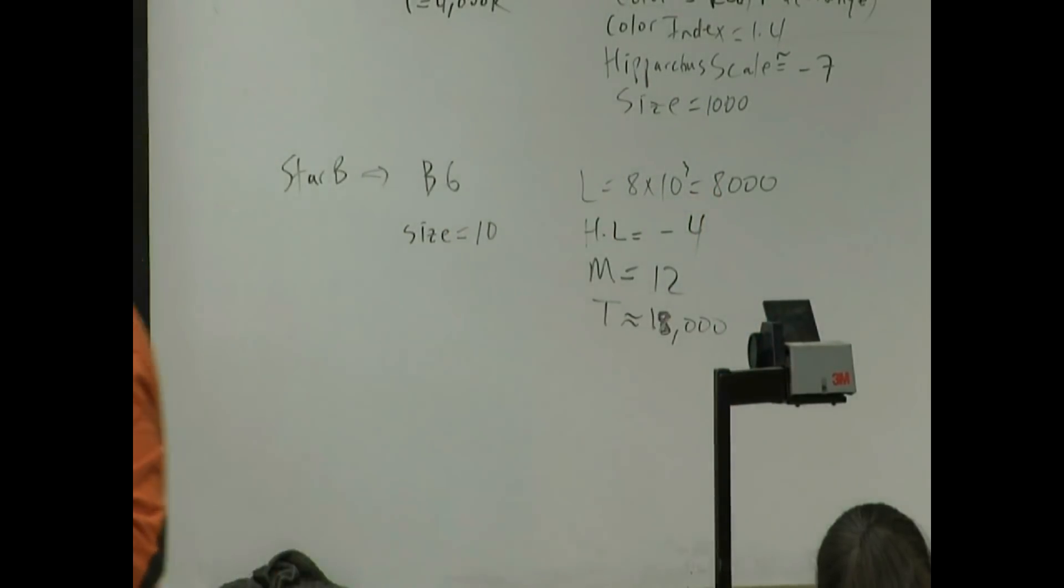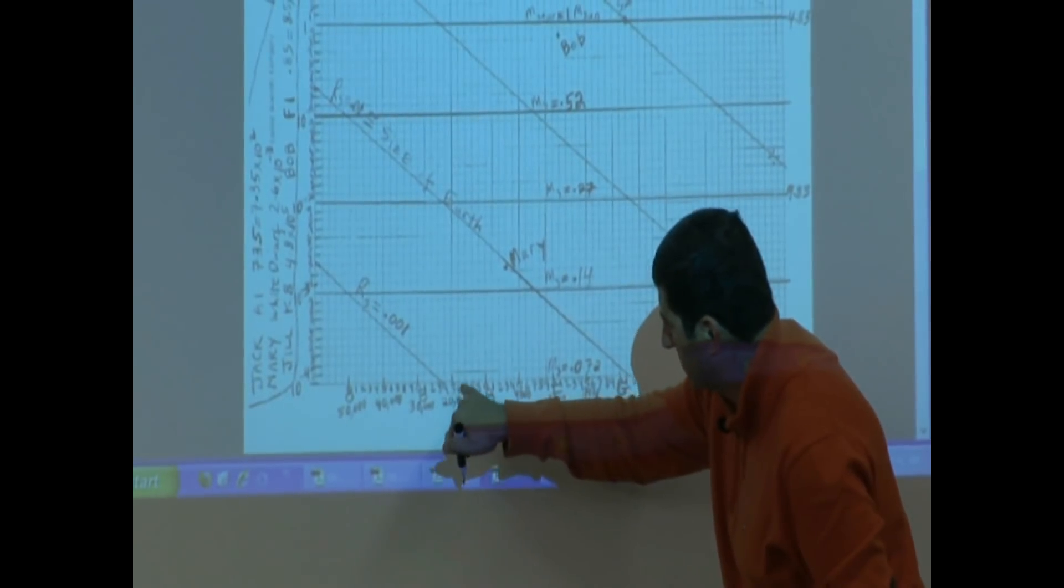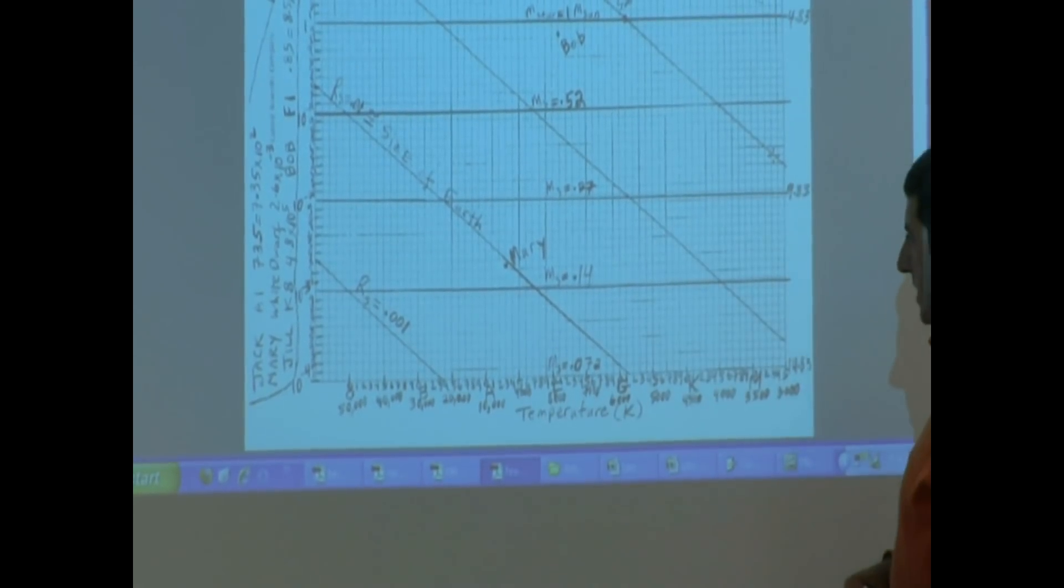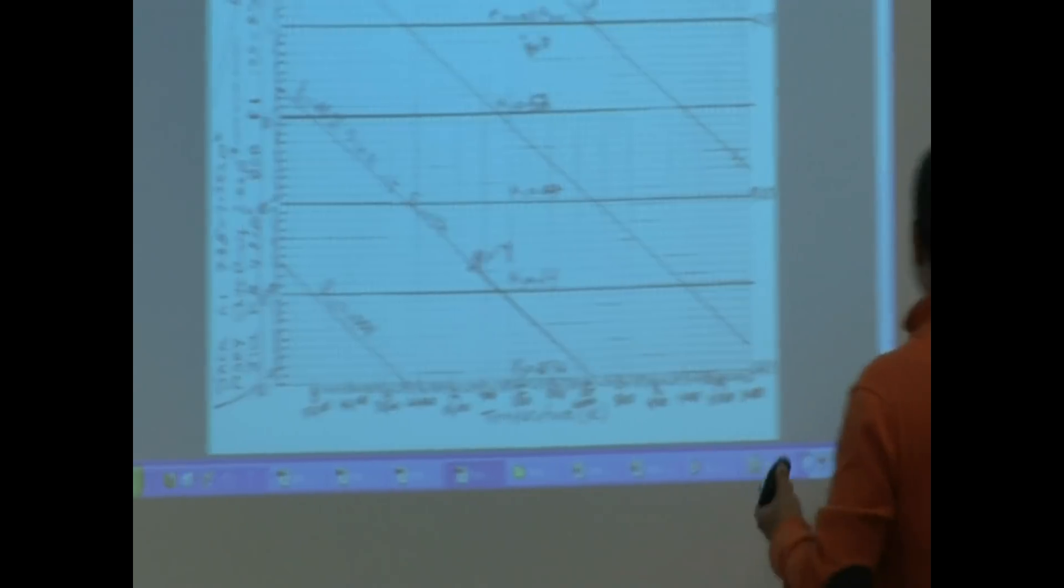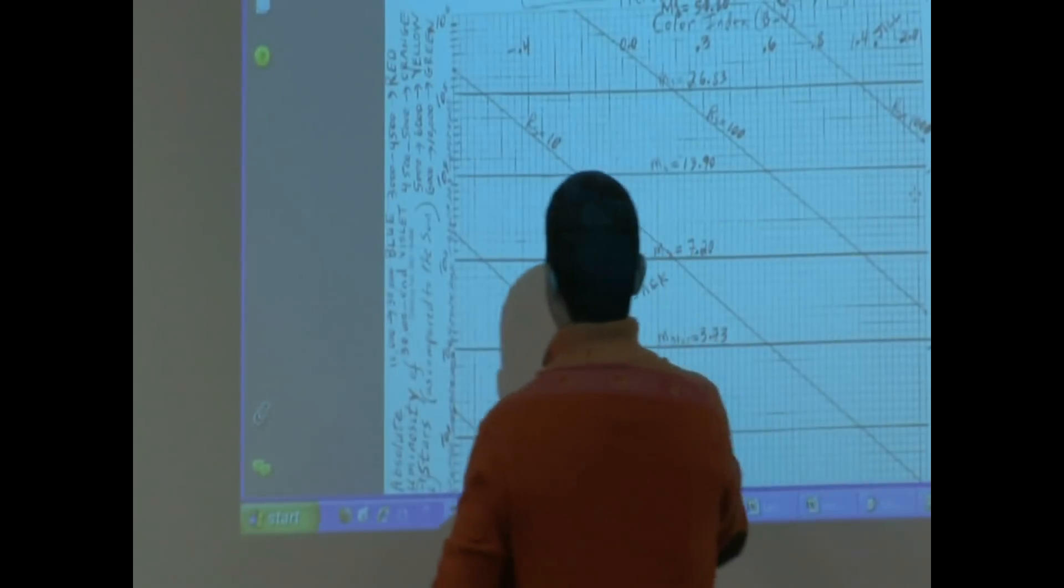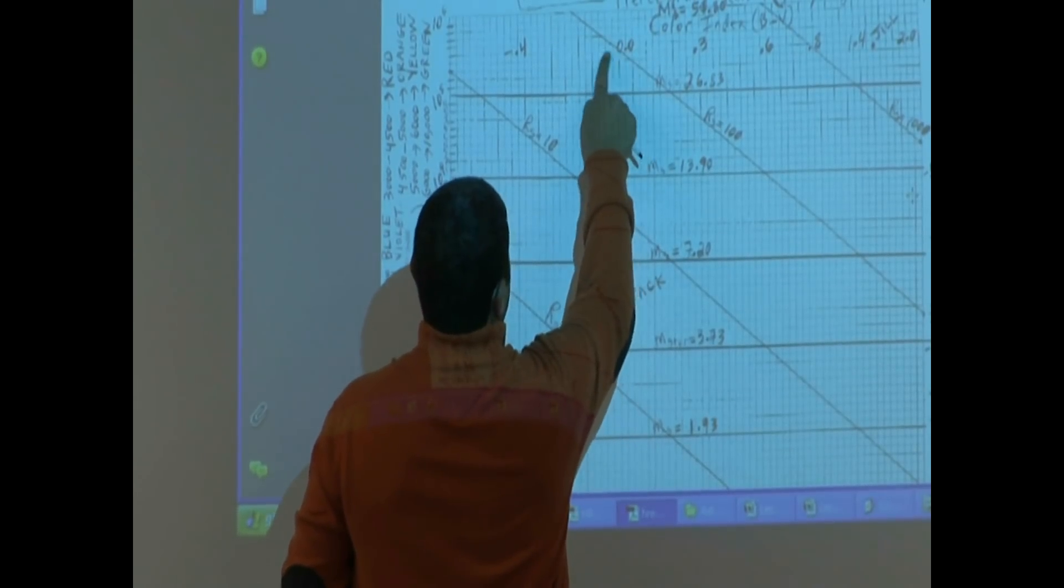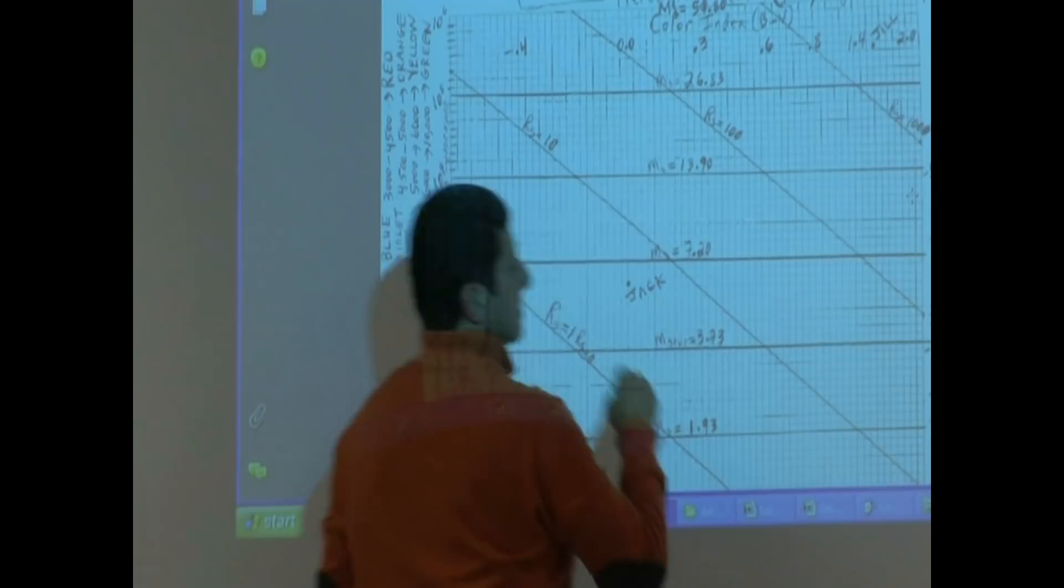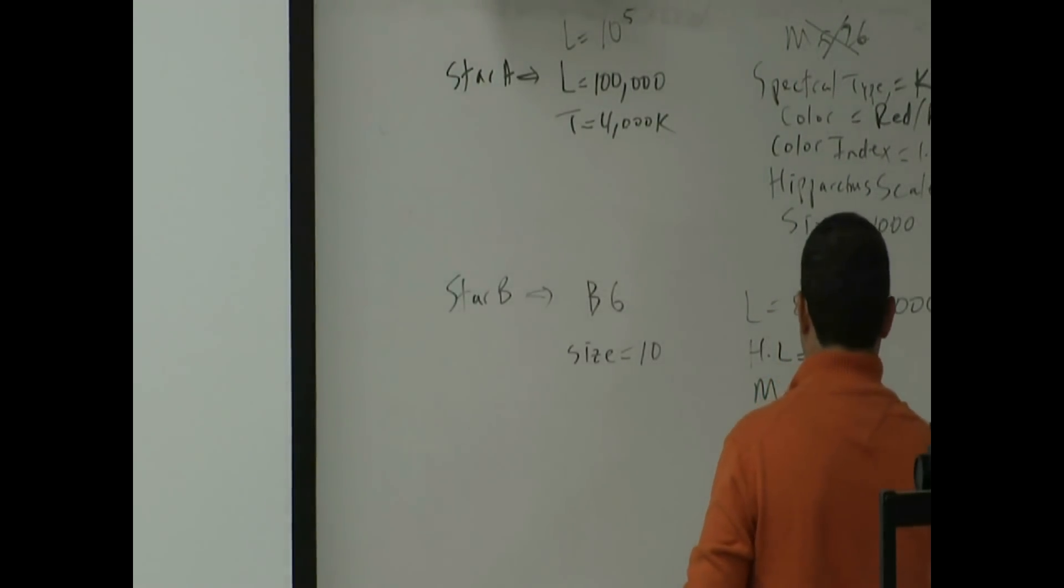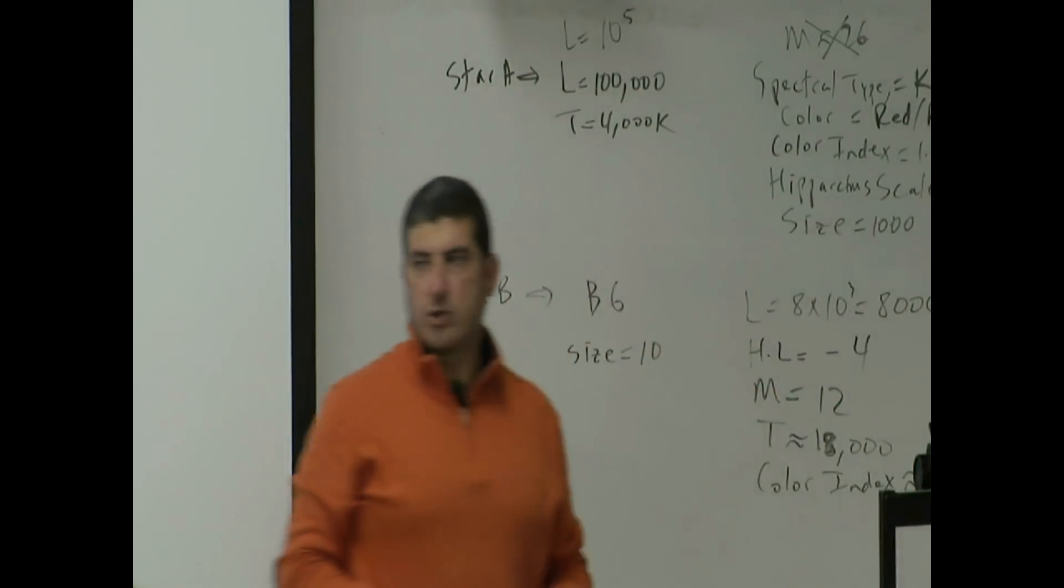Because it looks like it's colder than 20,000. 20,000 would be here. What else can we do? And then its color. Its color index would be, if we go up, its color index would be 0 or negative 0.1. Color index around negative 0.1.